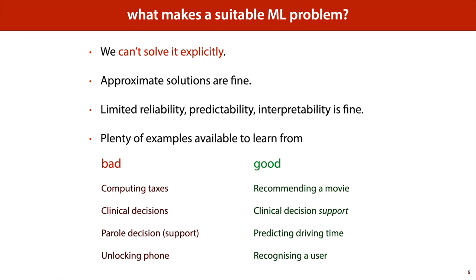Here are some examples of good and bad problem settings for machine learning. Computing taxes, for instance: that's a case where we know the exact algorithm, so we can actually implement the rules and just compute them — there's no need to learn them. Also, approximate solutions and limited reliability are not fine here. We need taxes to be computed exactly, all the time, perfectly. And we need them to be interpretable: if we get a computation for our taxes, we need to know where it came from. And that's something that machine learning also doesn't always give us.